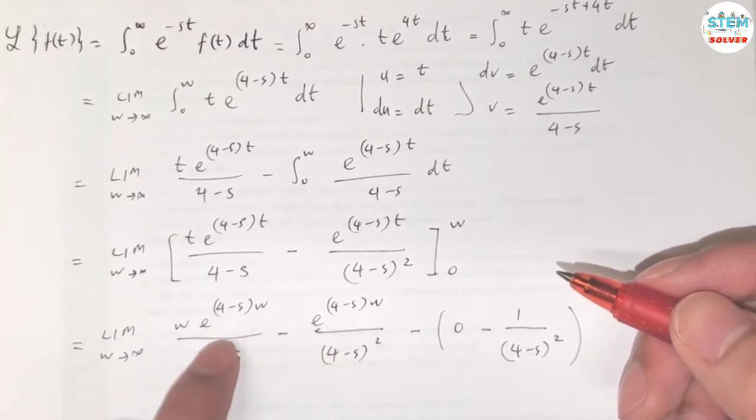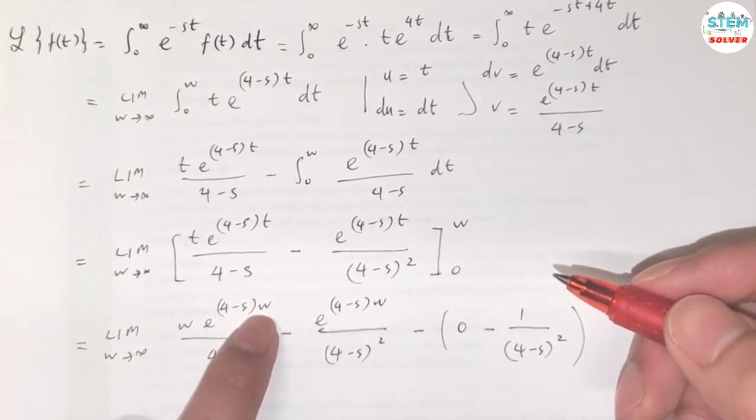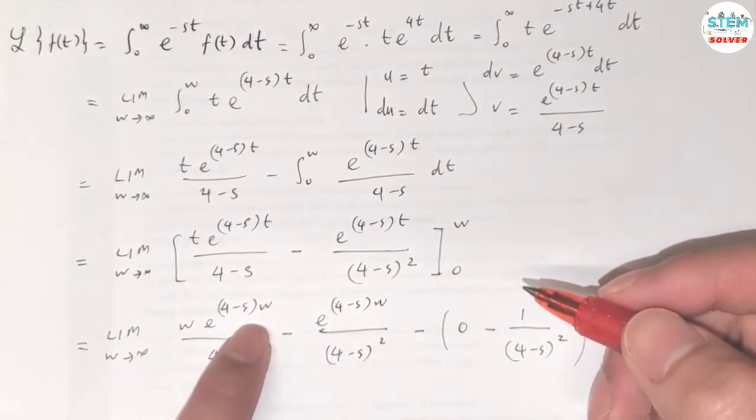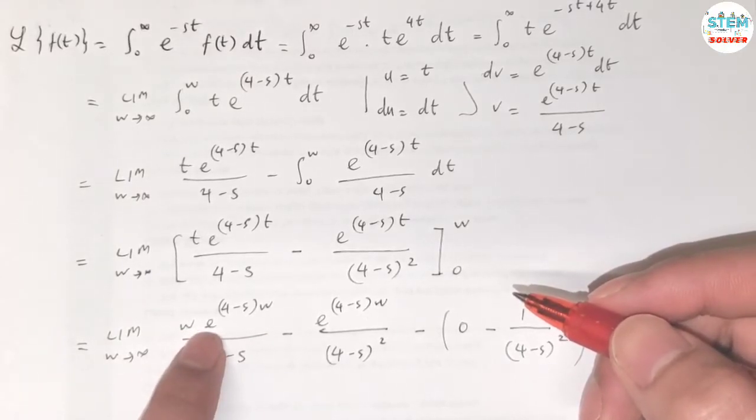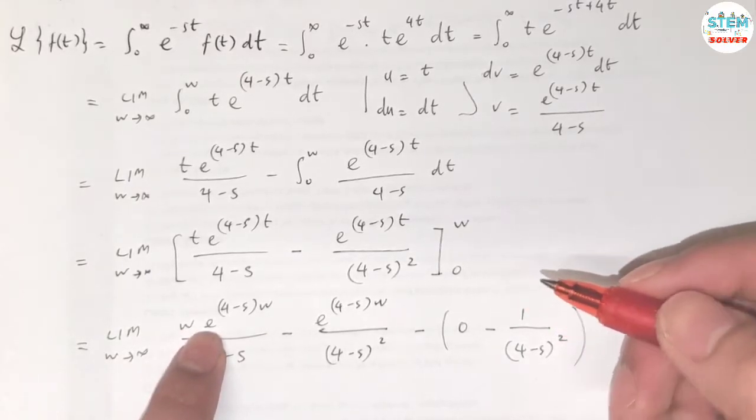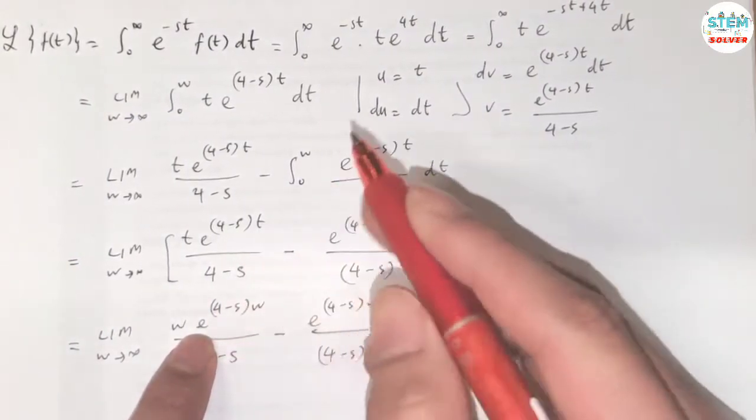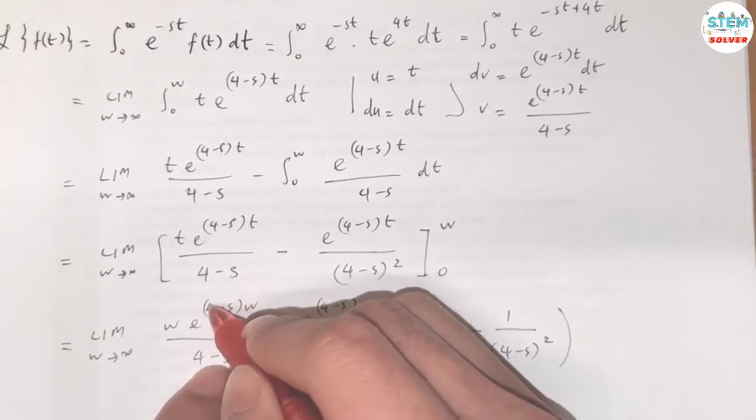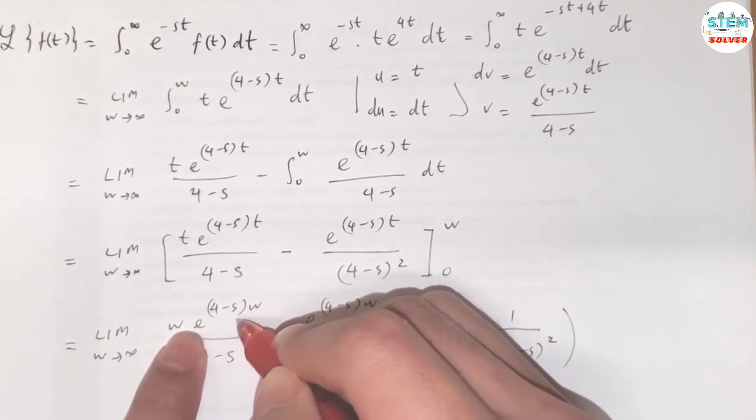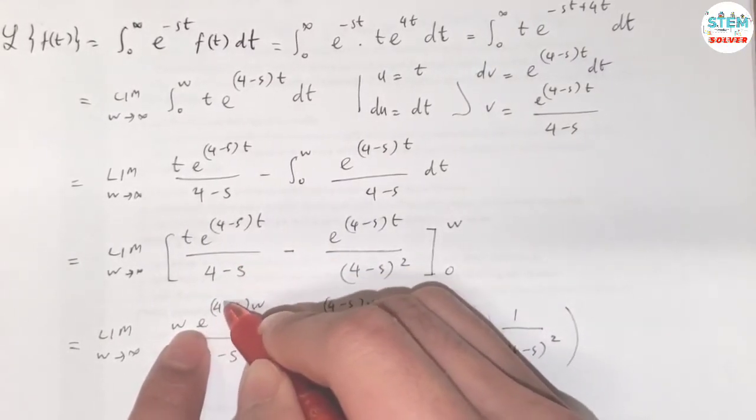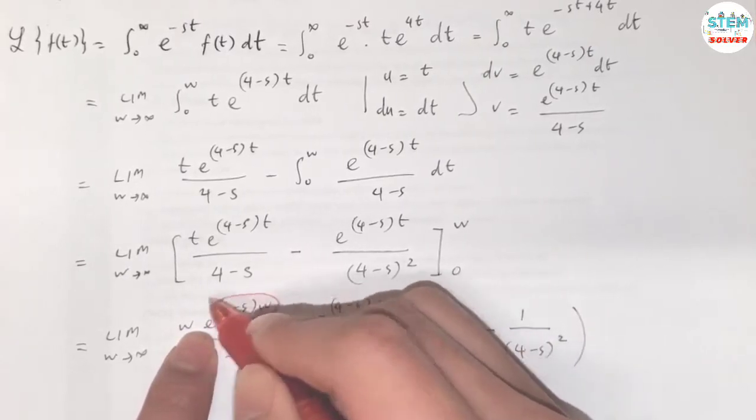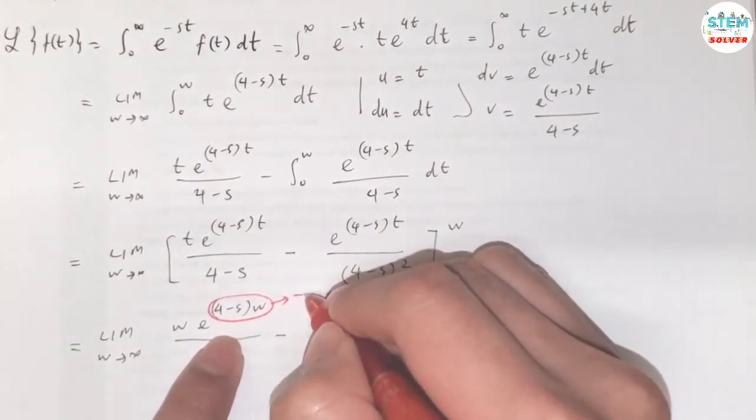But for these two, we have a problem because we have s unknown and w as this goes to infinity. So to make this converge, we have to make e to the power go to negative infinity. So the exponent will go to negative infinity, but this will go to 0 when this goes to negative infinity.